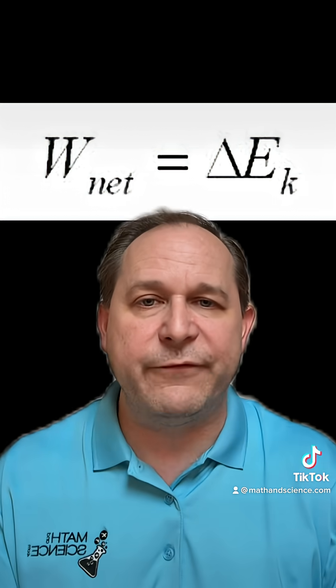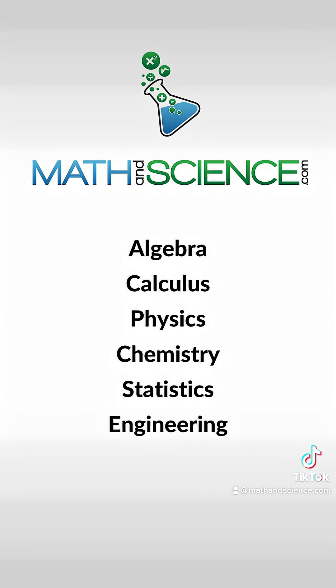This equation also applies to negative work. If I do negative 10 joules of work, then the change in kinetic energy is also negative 10 joules — it goes down by 10 joules. Positive work means an increase in kinetic energy by the same number of joules; negative work means the kinetic energy goes down by the same number of joules. So if this train is coming right at me and I'm pushing against its motion in the opposite direction, I'm trying to slow it down — that's doing negative work. Learn more at mathandscience.com.